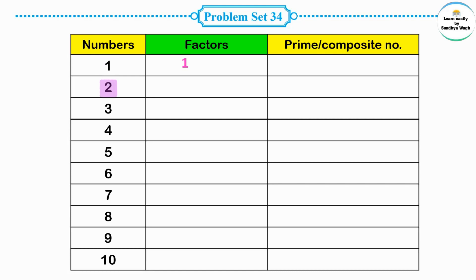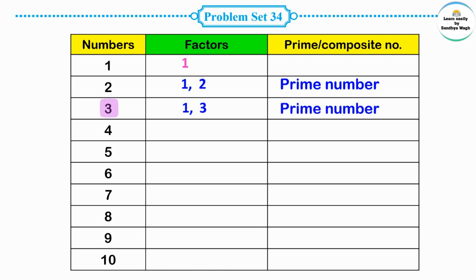Number 2 has two factors: first factor 1 and second factor the number itself. So number 2 is a prime number. Number 3 also has only two factors: first factor 1 and second factor the number itself. So number 3 is also a prime number. Number 4 has three factors: 1, 2, and 4. So number 4 is a composite number because it has more than two factors.